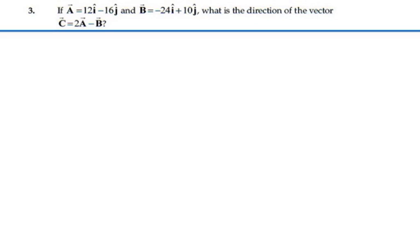If A is equal to 12i minus 16j and B is equal to negative 24i plus 10j, what is the direction of the vector C equal to 2A minus B? This is problem 3.